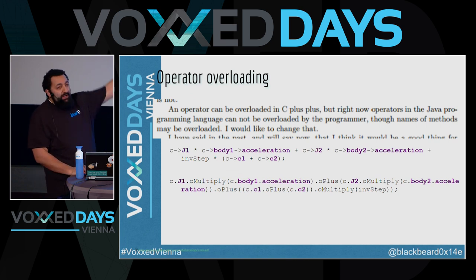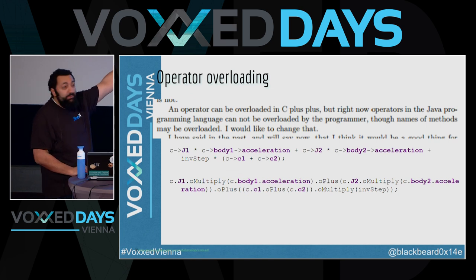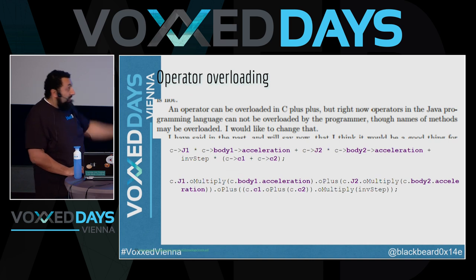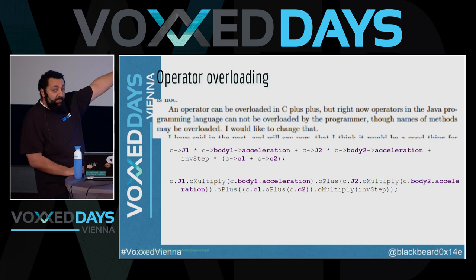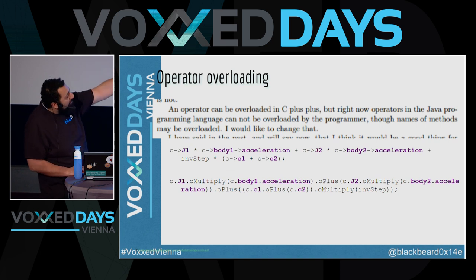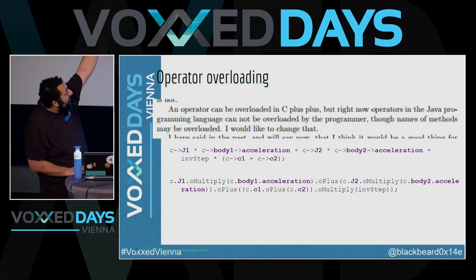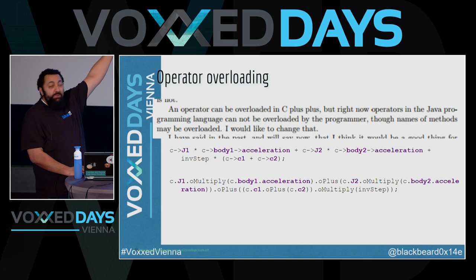I showed this specific example because I had a bug in it and spent about two weeks chasing it — it was basically one bracket that was in the wrong place. With the C++ version it's much easier to find those kinds of bugs. It's with the verbose Java method-chain style that they become hard to spot.